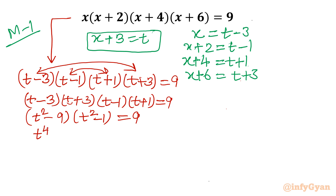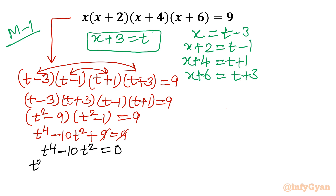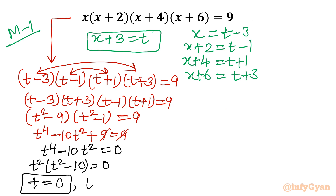Expanding this gives t⁴ minus 10t² plus 9 equal to 9. We can cancel the 9 on both sides, so we have t⁴ minus 10t² equal to 0. Taking t² as a common factor, we get t²(t² minus 10) equal to 0. From here we conclude that t equals 0 or t equals plus or minus square root of 10.